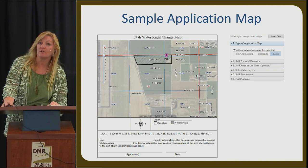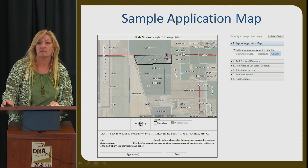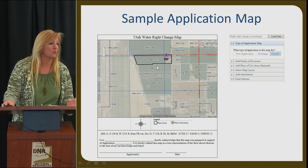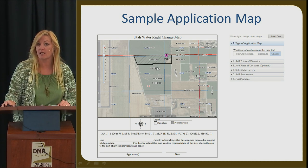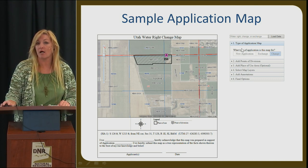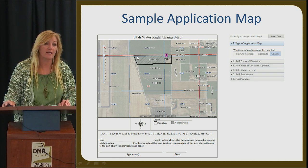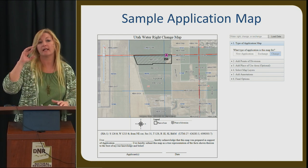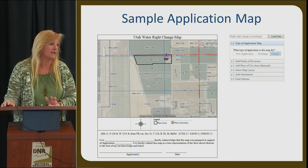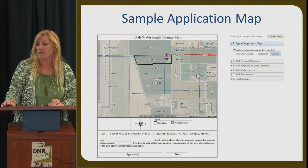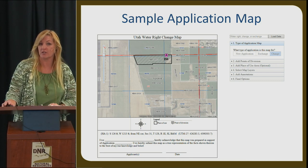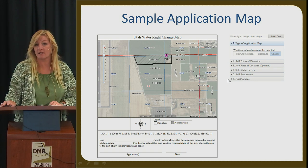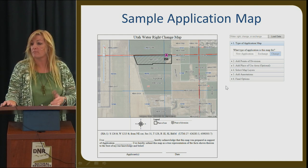Here is a sample application map. This shows the point of diversion and the 40-acre tract. On the map you can narrow down where in that 40-acre tract or quarter section your actual use will take place. You can turn on map layers and parcels, then highlight your parcel. If it's a smaller parcel, you can outline it; if it's a large parcel, we would likely ask you to narrow it down — for example, where on that 40-acre parcel will the house be built?